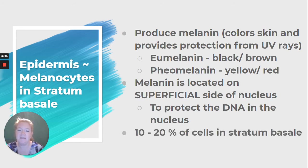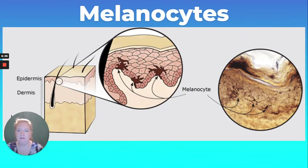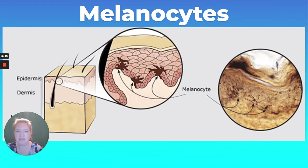Melanocytes make up about 10 to 20% of cells in the stratum basale — so about 1 out of 10 or 1 out of 5 cells in the stratum basale are melanocytes. They look like spidery projections coming from them, and you can see clearly they're in that single stratum basale layer.